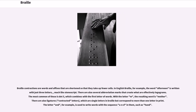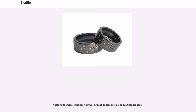Braille contractions are words and affixes that are shortened so that they take up fewer cells. In English Braille, for example, the word AFTERNOON is written with just three letters, much like shorthand. There are also several abbreviation marks that create what are effectively logograms. The most common of these combines with the first letter of words; with the letter M, the resulting word is MOTHER. There are also ligatures — contracted letters which are single letters in Braille but correspond to more than one letter in print — for example, AND is used to write words with the sequence A-N-D, such as HAND. Most Braille embossers support between 34 and 40 cells per line and 25 lines per page.